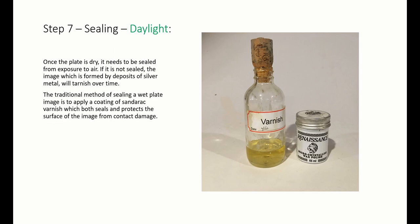The traditional method of sealing a wet plate image is to apply a coating of sandarac varnish, which both seals and protects the surface of the image from contact damage. A quicker method, which will seal but not protect, is to apply a wax finish.